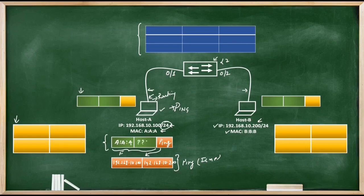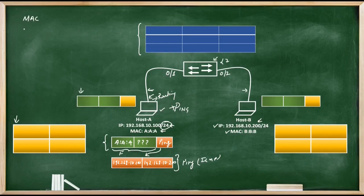Here is the problem — what will be the destination MAC address? This host doesn't know the destination MAC address, which means Host A cannot complete this packet. If the packet is not complete, it cannot go out of the ethernet interface. So Host A keeps this packet in its memory and tries to find the destination MAC address. Host A will use Address Resolution Protocol, or ARP, to solve this problem.